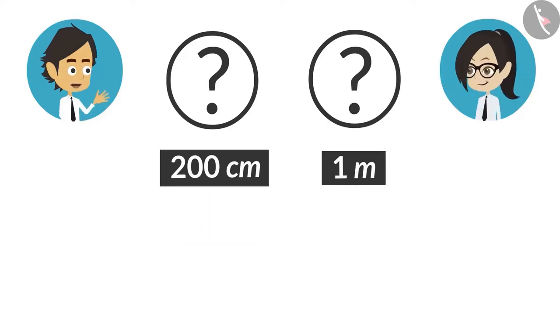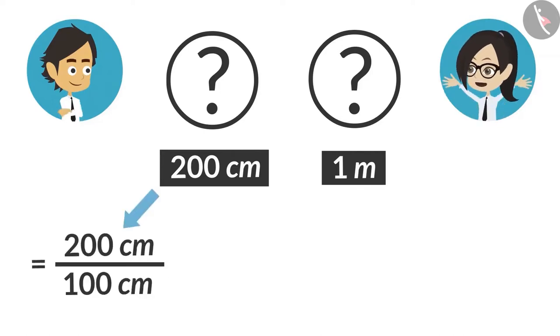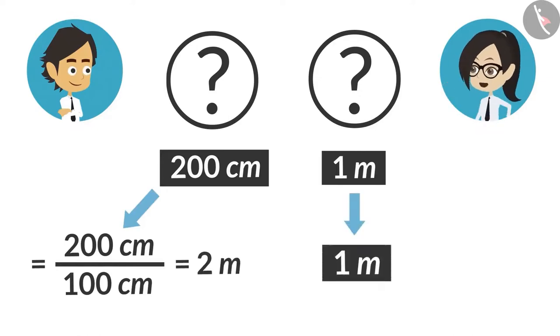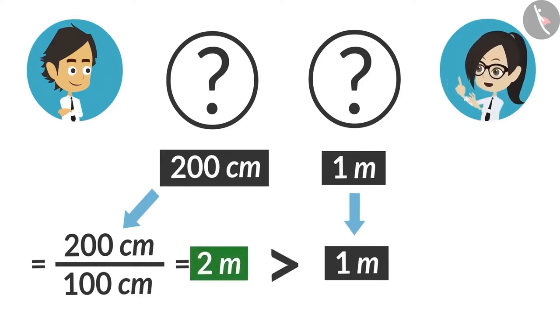Now convert 200 centimeters into meters and see. 200 centimeters divided by 100 gives 2 meters. Yes! Even now you can compare 1 meter and 2 meters and say that 2 meters is bigger.